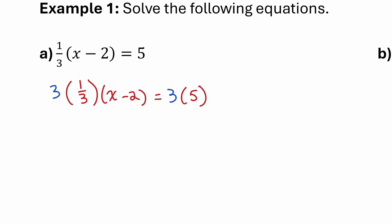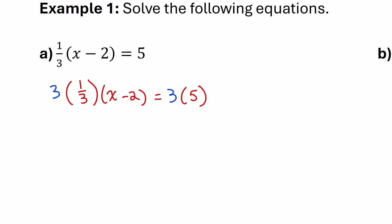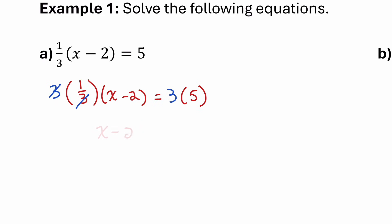Make sure you don't forget that both sides get multiplied by 3 so the equation stays balanced. The reason why we do that is because on the left side of the equation, I have a 3 divided by 3, which is 1, so I can cancel those out. Leaving me with on the left: 1 times x minus 2, which is just x minus 2, equal to — and on the right side, 3 times 5 is 15.